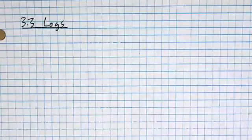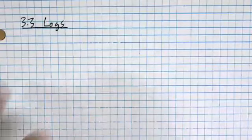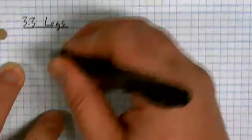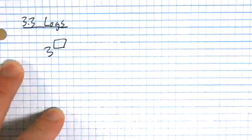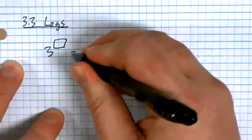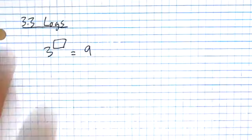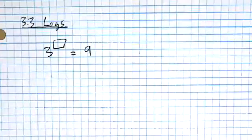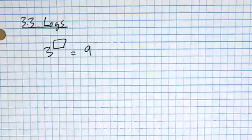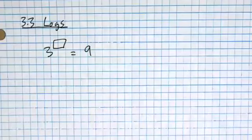Here's some questions for you: what exponent can I put onto a three to make it equal to nine? You can all answer that question — that's an easy question. The answer is two.